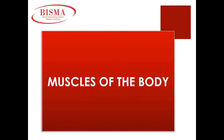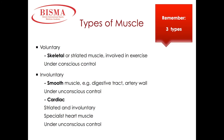Muscles of the body: we have three types of muscle. Voluntary or skeletal muscle is striated in appearance and is involved in exercise under our conscious control. Involuntary smooth muscle is found in the digestive tract and artery walls and is under unconscious control. Cardiac muscle is also striated but involuntary, found within the heart and also under unconscious control.